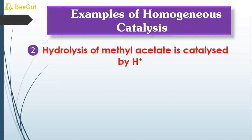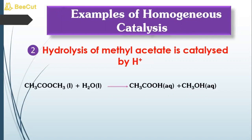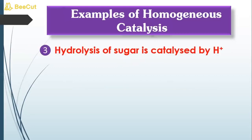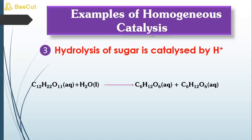The second example of homogeneous catalysis is hydrolysis of methyl acetate catalyzed by an acid such as HCl or H₂SO₄. Here, methyl acetate is a liquid, water is a liquid, and the catalyst HCl or H₂SO₄ is also present in the liquid phase. The third example is hydrolysis of sugar catalyzed by an acid — sucrose is in aqueous medium, water is a liquid, and H₂SO₄ is also a liquid.